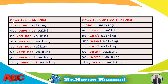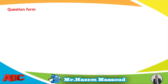For example, the negative full form: I was not walking, you were not walking, he was not walking, she was not walking, it was not walking, we were not walking, you were not walking, they were not walking. And these sentences in the contracted form: I wasn't walking, you weren't walking, he wasn't walking, she wasn't walking, it wasn't walking, we weren't walking, you weren't walking, they weren't walking.